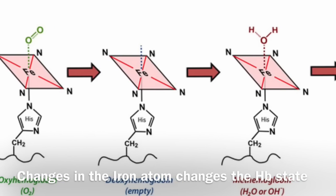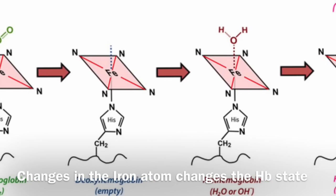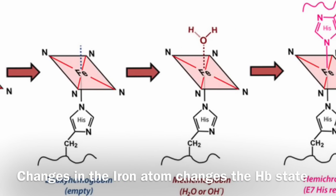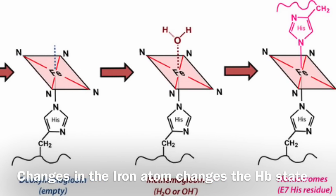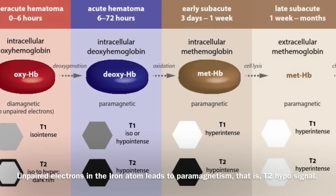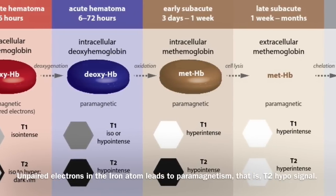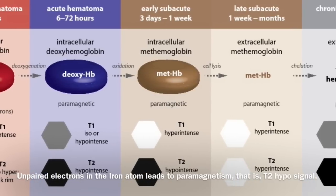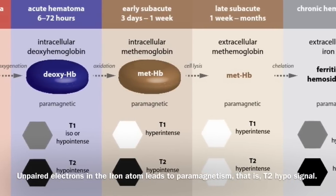What does hematoma evolution mean? It is the change in the physiologic state of hemoglobin — more precisely, the iron atom in the heme group. Hemoglobin passes through four states: oxyhemoglobin, deoxyhemoglobin, methemoglobin, and hemosiderin. This plays a major role in hematoma appearance on MRI. The appearance is due to the hematoma microstructure and the number of unpaired electrons in the iron atom. Unpaired electrons create a paramagnetic field that leads to signal loss on T2-weighted imaging and blooming on T2*. The time period of hematoma evolution follows the rule of three: first three hours is hyperacute, three days is acute, and three weeks is subacute.